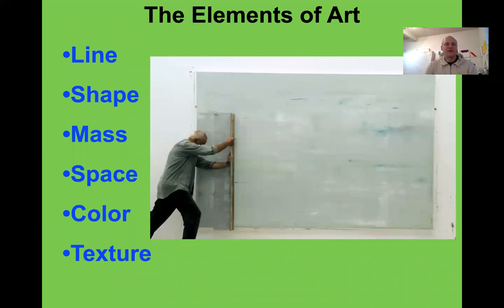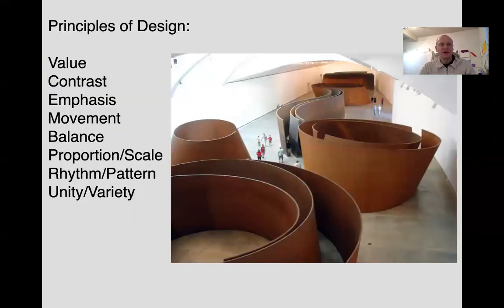We're going to spend a lot of time talking about the elements of art and the principles of design. You'll be familiar with a lot of these words — we're just going to use them in a very specific way to describe art. They're sort of the language of art: line, shape, mass, space, color, and texture. Think of them as describing individual Lego blocks.